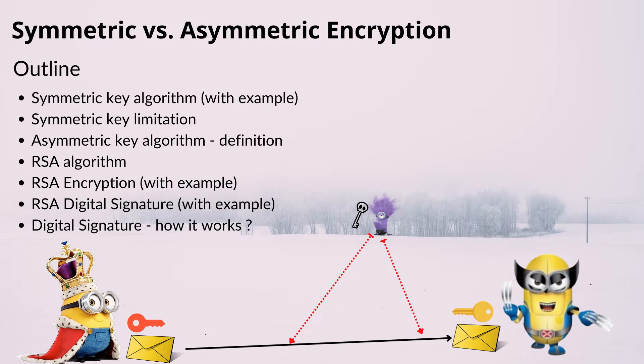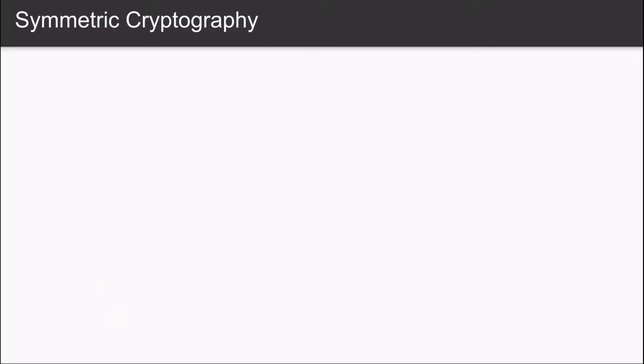Then we will look at what are the limitations in symmetric key algorithm. Then we will look at how asymmetric key algorithm actually comes into play and addresses the limitations of symmetric key algorithm. We will look at the most common asymmetric key algorithm known as RSA. We look at how it's used in encryption as well as in digital signatures by giving you very interesting examples of minions. And then finally we are going to look at how digital signature works. So let's get started.